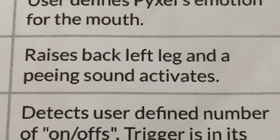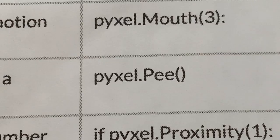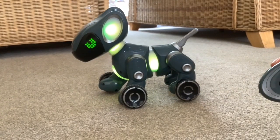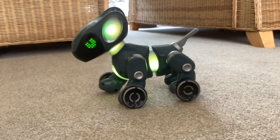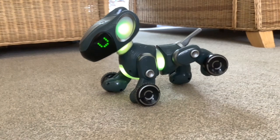This one will be a lot more obvious. P — raises back left leg and a peeing sound activates. The Python code is pixel.p, with nothing in the brackets because you can only p in one way. That's number two on the code activator. I did notice when I ran this code before, he doesn't put his leg down — he keeps his leg up. I wonder if that's because there's no more lines of code following. We'll have to try that out later.